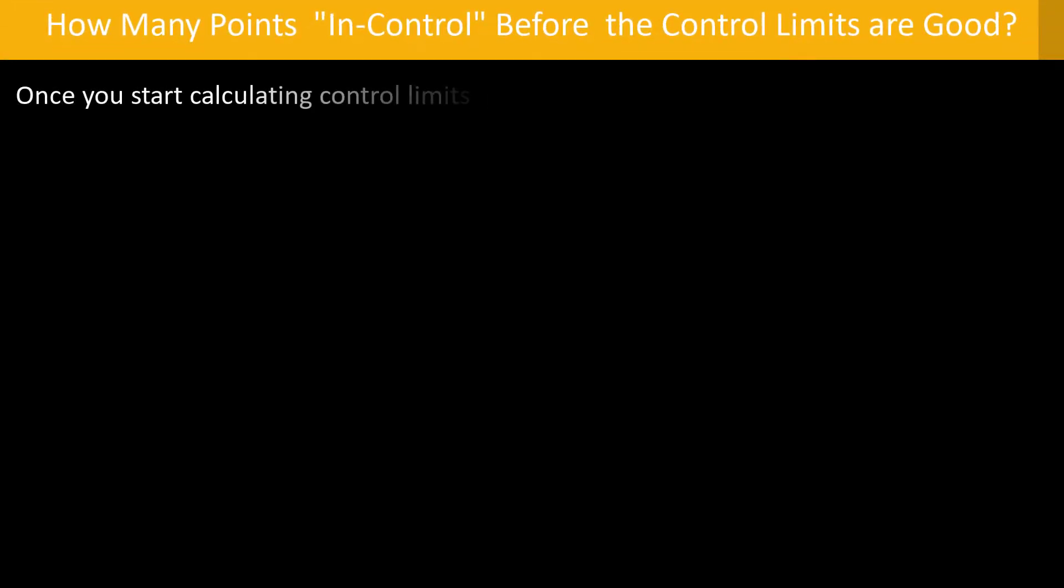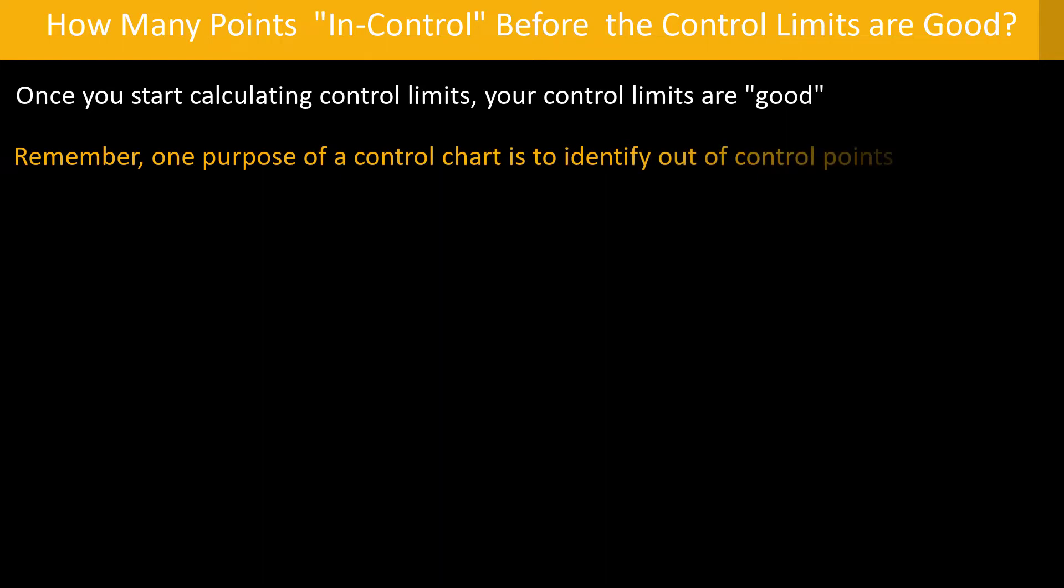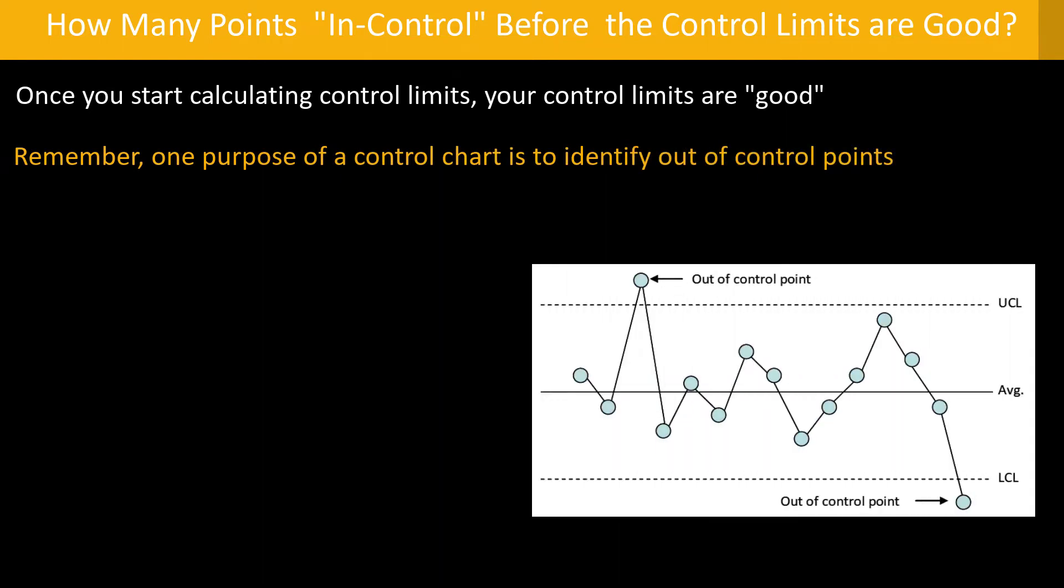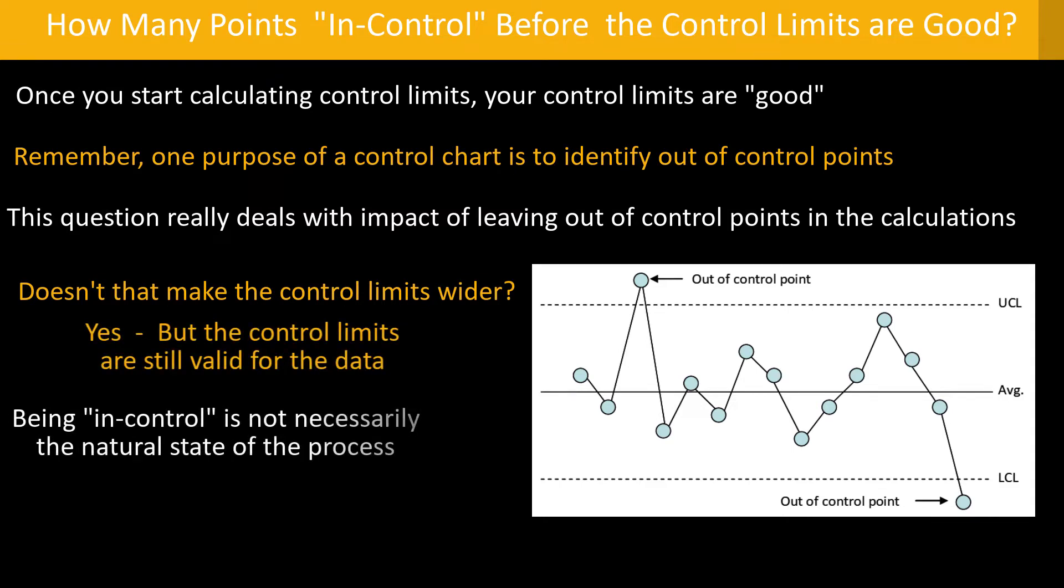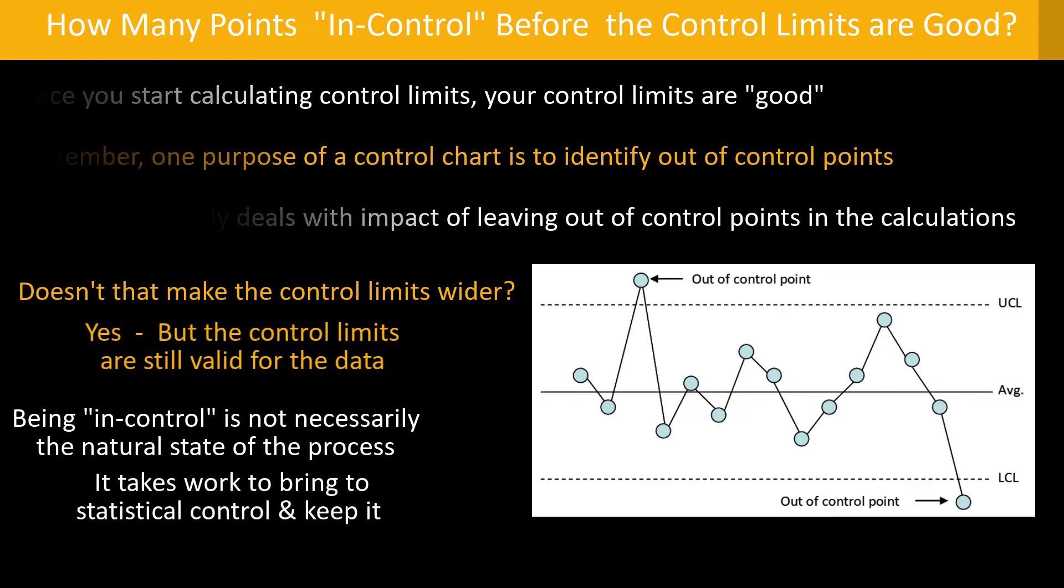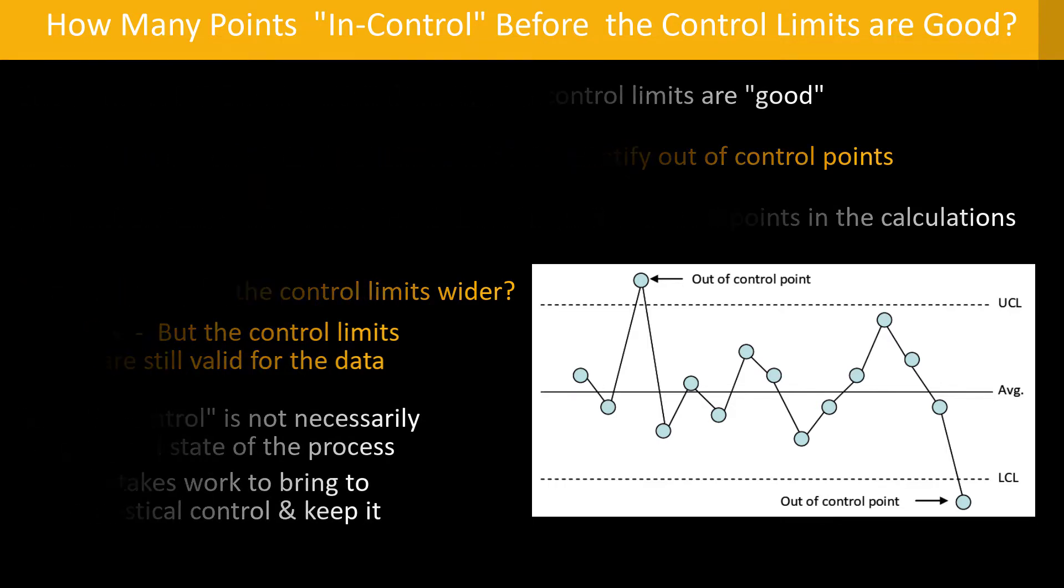So how many points have to be in control before the control limits are any good? Well, once you start calculating control limits, your control limits are automatically good. Remember one purpose of control charts is to identify out of control points. The question really deals with the impact of leaving out of control points in the calculations. Doesn't that make the control charts wider? Yes, but the control limits are still valid for the data you have plotted. Being in control is not the natural state. It takes some work to bring it into statistical control by eliminating those special causes.